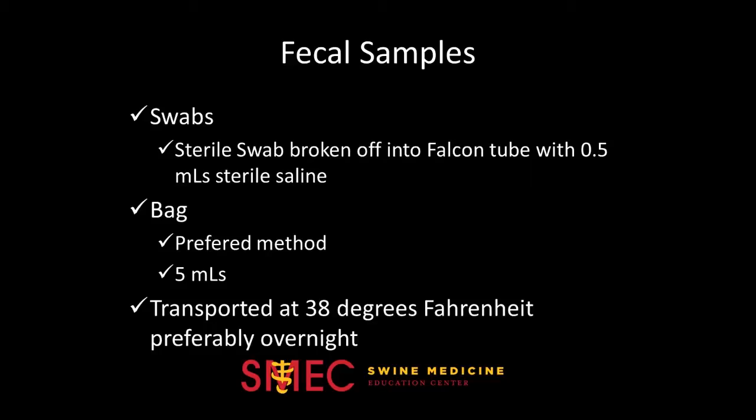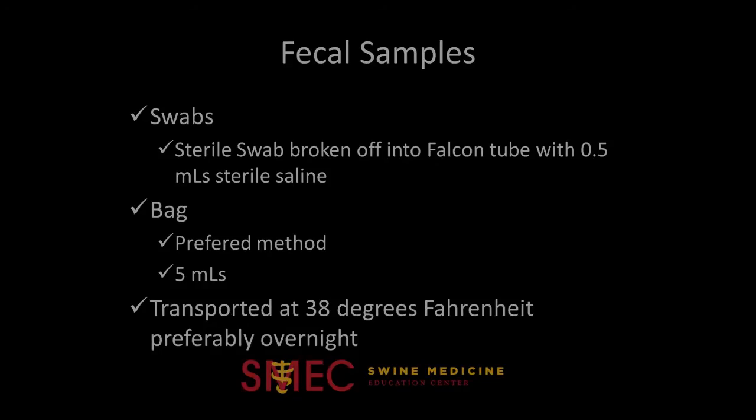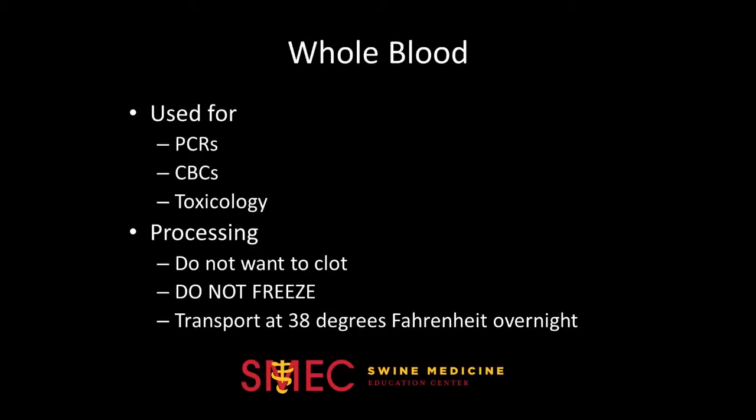Whole blood samples can be submitted to the D-Lab for evaluations like toxicology, complete blood chemistries, or some PCRs. When submitting whole blood, you do not want it clotted, so put it in the tube and gently invert the tube to mix up the anticoagulant solution present. Do not overfill the tube, or else the anticoagulants will not be in the right proportions to the blood to prevent clotting. As a general rule, try to only fill the tubes half full. Whole blood should be cooled down to around 38 degrees Fahrenheit and should not be frozen.